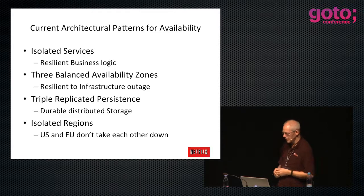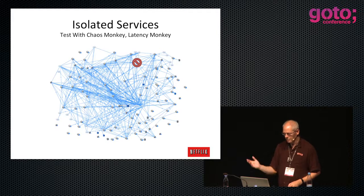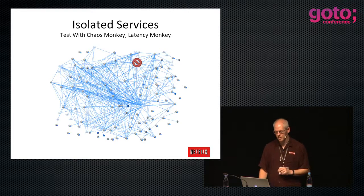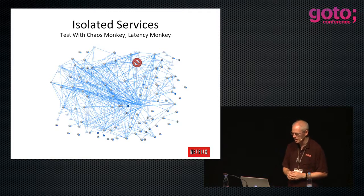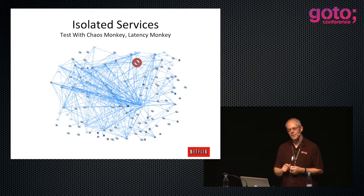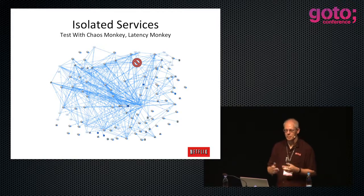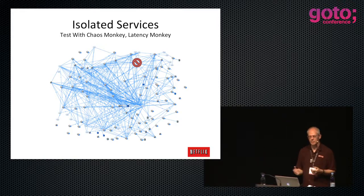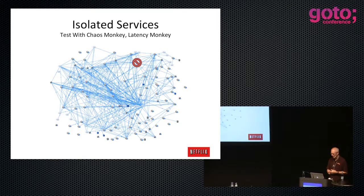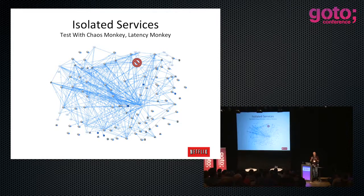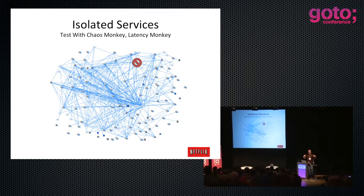We test this with the chaos monkey, which kills individual services. We also have a latency monkey which adds latency or makes a service return errors at some rate - I can make it return 500 series error codes, insert three-second delays, or make it never respond occasionally. The errors and latency ripple out from that point, and the other services have to absorb it.